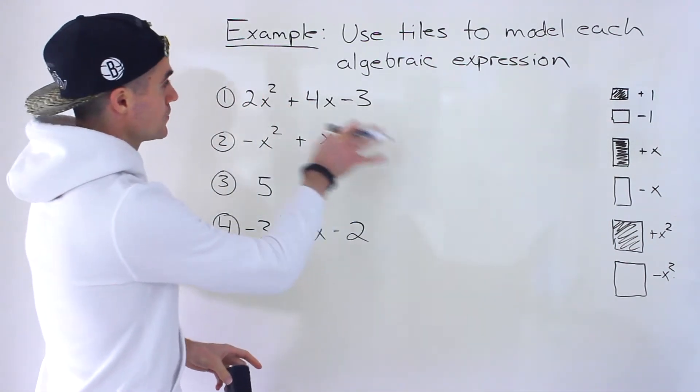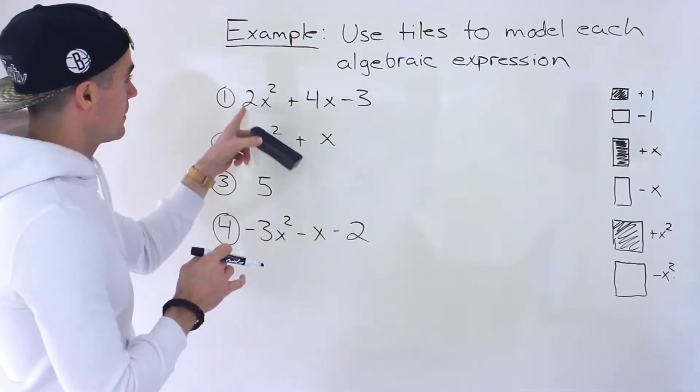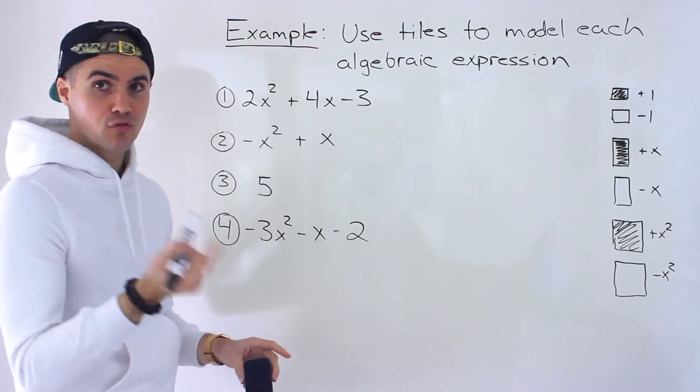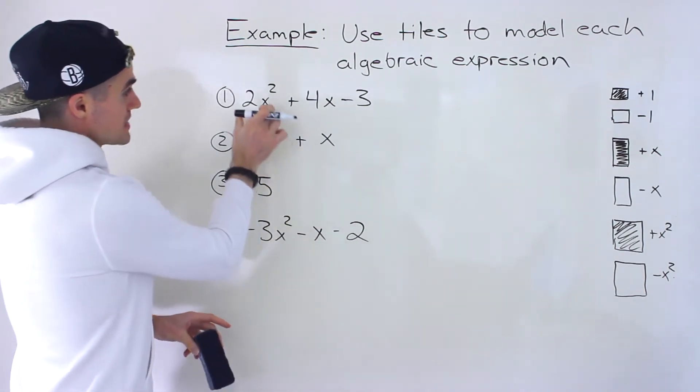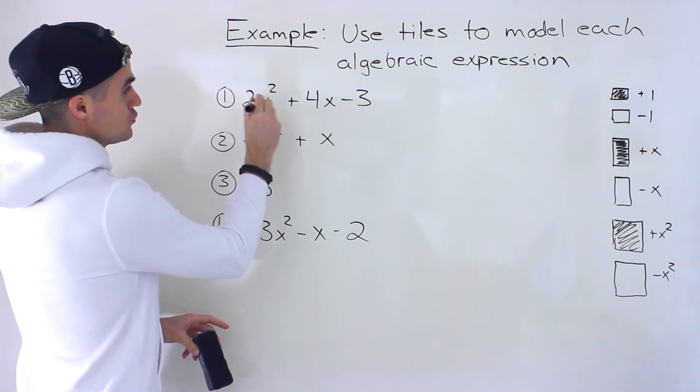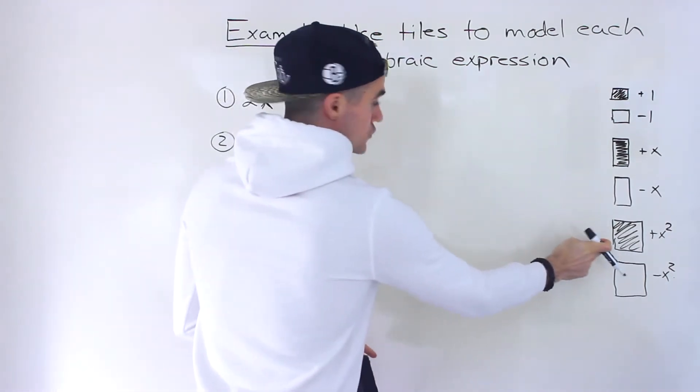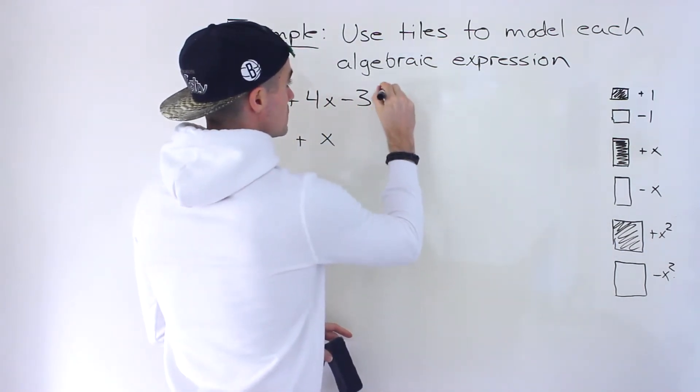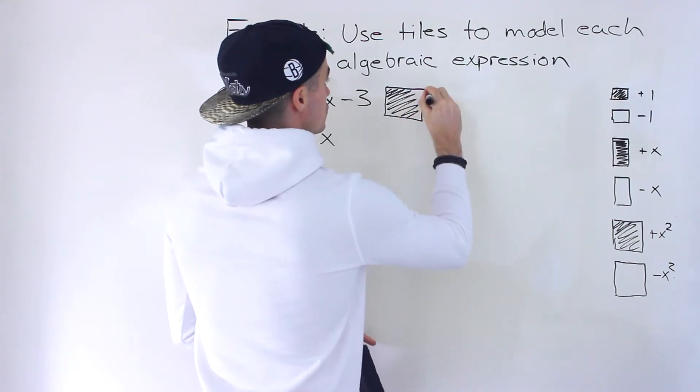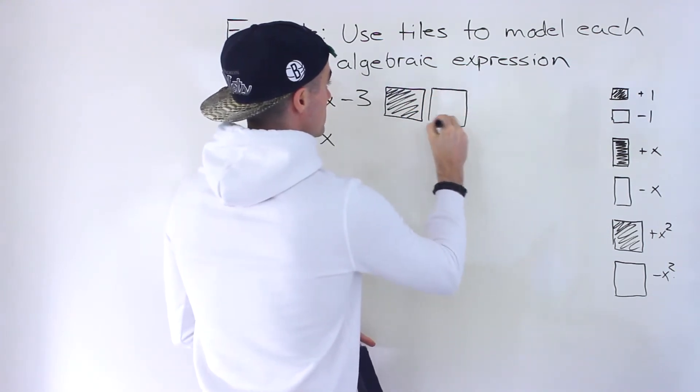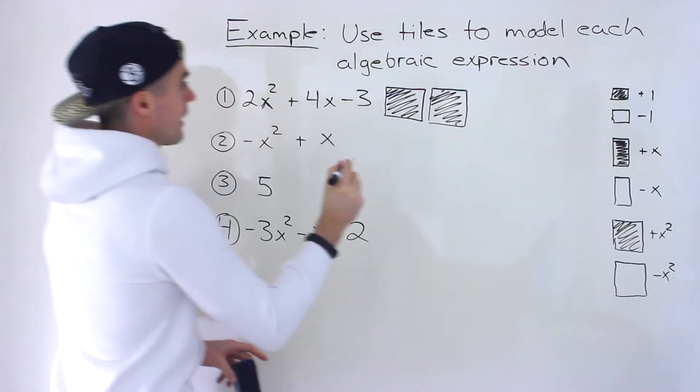So we have to apply those over here. Notice in number 1, we have 2x squared plus 4x minus 3. So notice that we're going to have 2x squared, and it's positive. So we would have 2 of these. What we would do is we would draw 2 large squares like that.